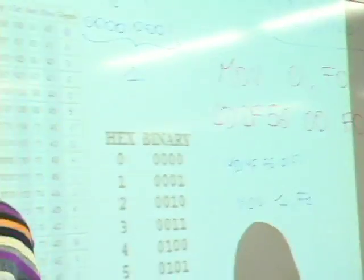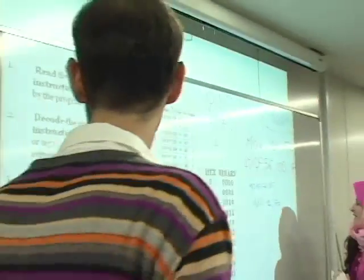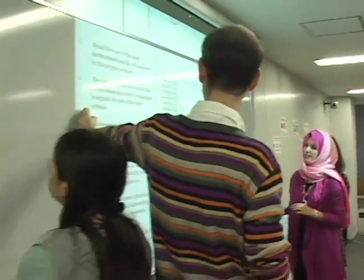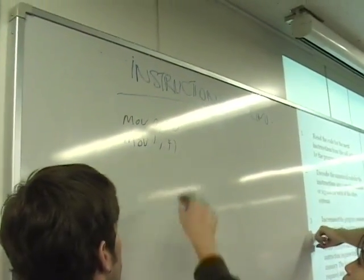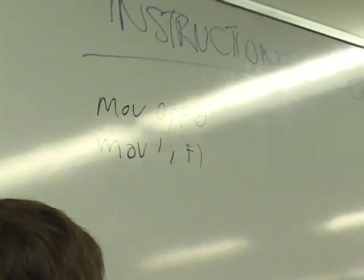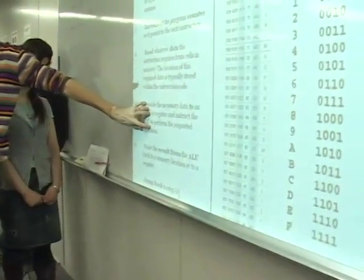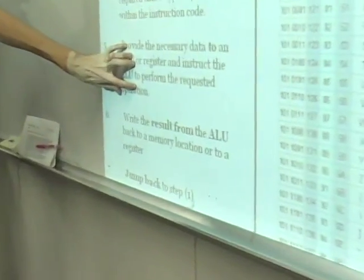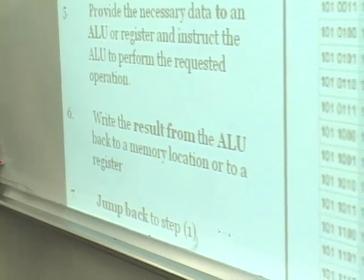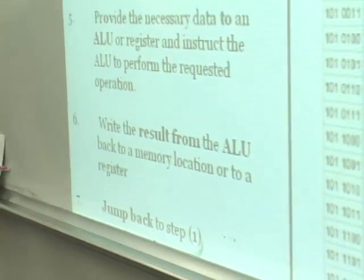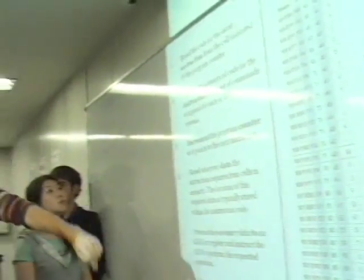The new instruction we have here is move one to F1. Don't forget step three: increment the program counter so it points to the next instruction. So that's what we did here. We read data, we read F1 and F0, we provided the data to the arithmetic unit — they add them, gives you the result, write back the data in memory. Now we've done this, we are at step seven, we jump back to read the code for the next instruction.